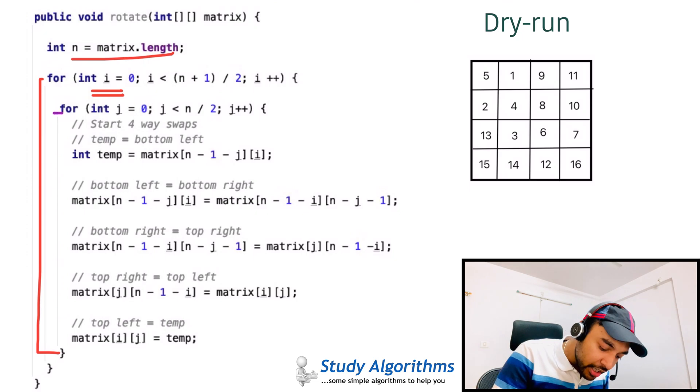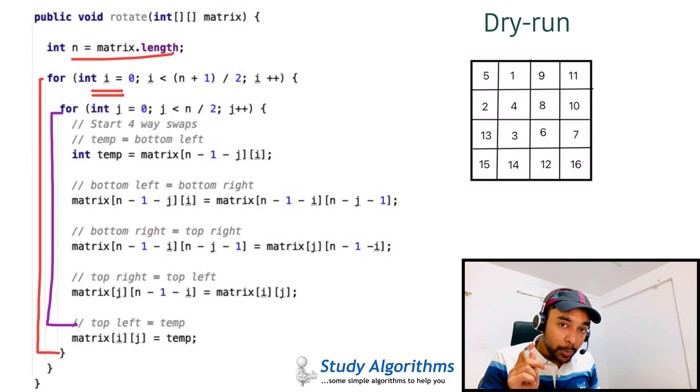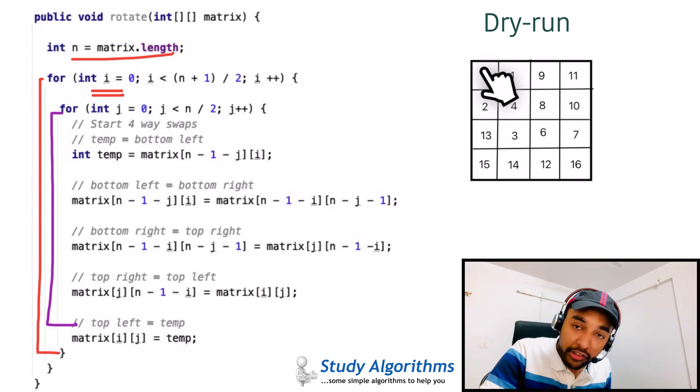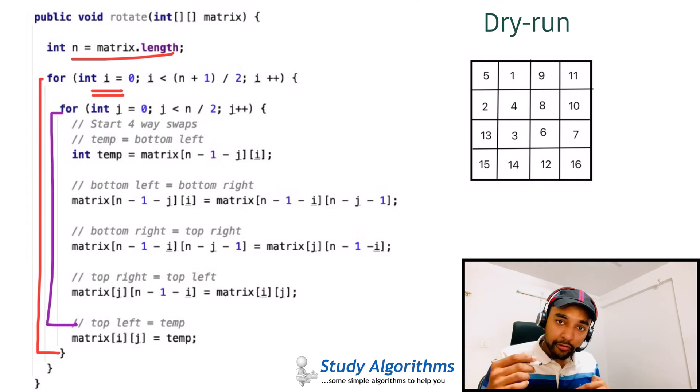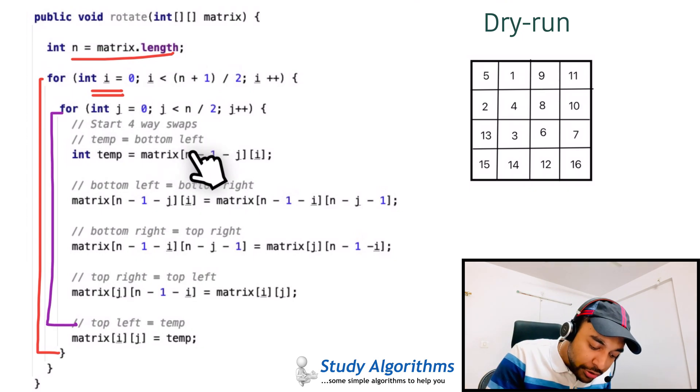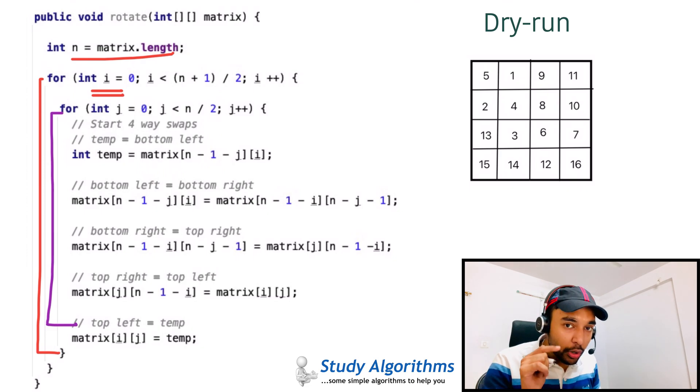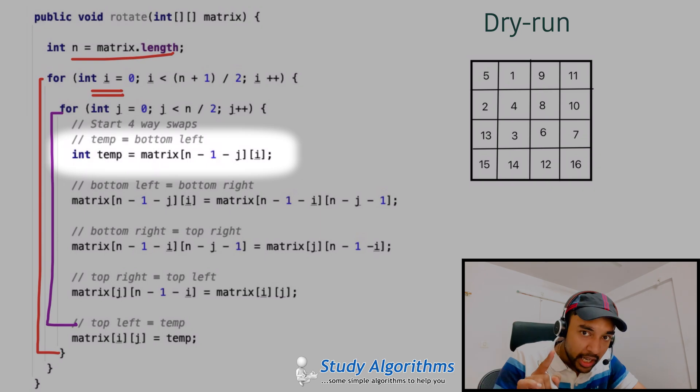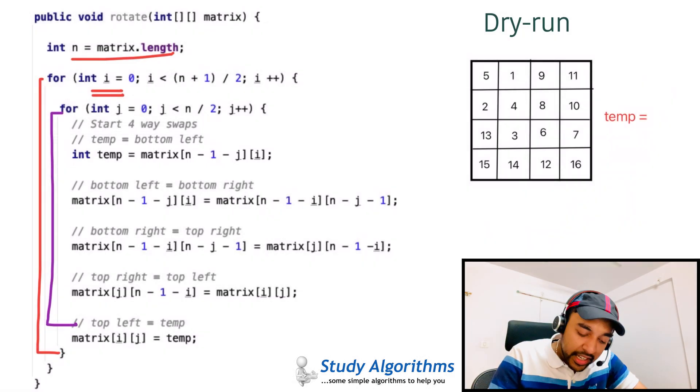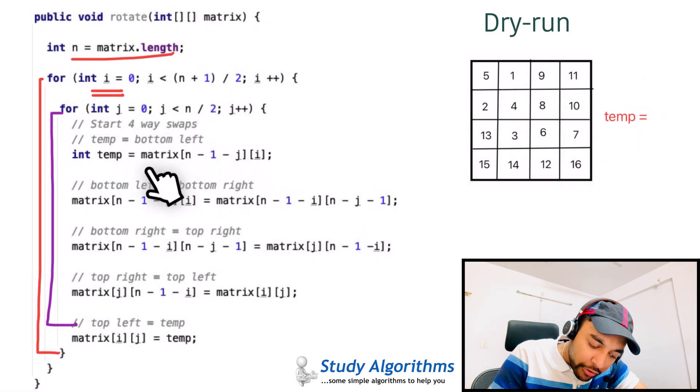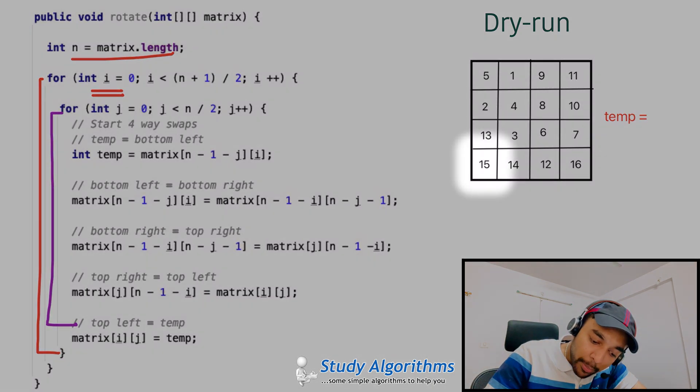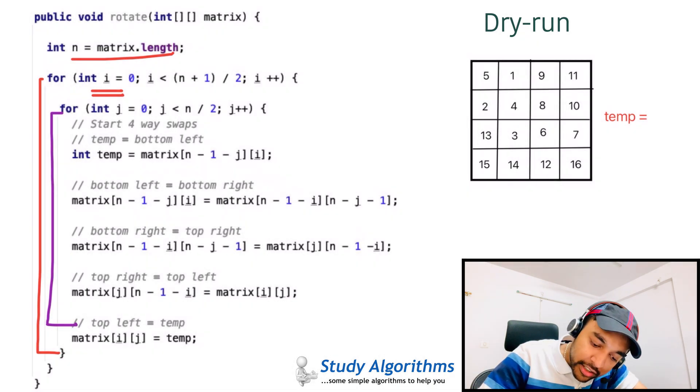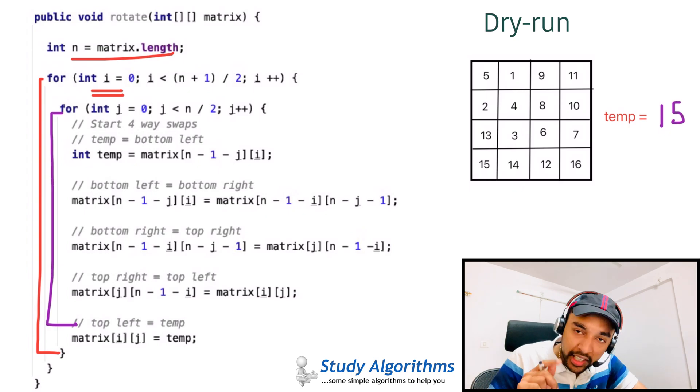Next, you have the inner loop j. This loop keeps a track of each element in the ring you are choosing. First of all, we would be dealing with 5, then 1, and then 9 and so on. Once you enter these loops, you start your 4-way swaps. I will quickly show you how does this swapping work. I first of all have a temp variable. And I assign the bottom left value of this matrix to my temp variable. The bottom left value is 15. So I assign 15 to my temp variable.